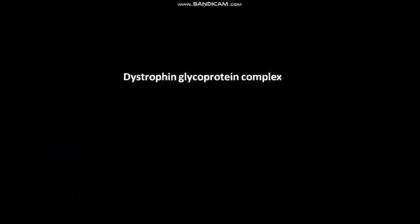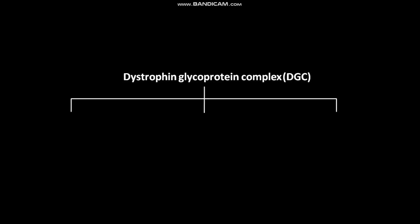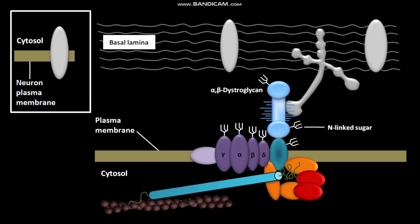The dystrophin glycoprotein complex, or DGC, in skeletal muscle cells comprises three sub-complexes: the alpha-beta-dystroglycan sub-complex, the sarcoglycan or sarcospan sub-complex of integral membrane proteins, and the cytosolic adapter sub-complex. The cytosolic adapter sub-complex is composed of dystrophin, other adapter proteins, and signaling molecules.